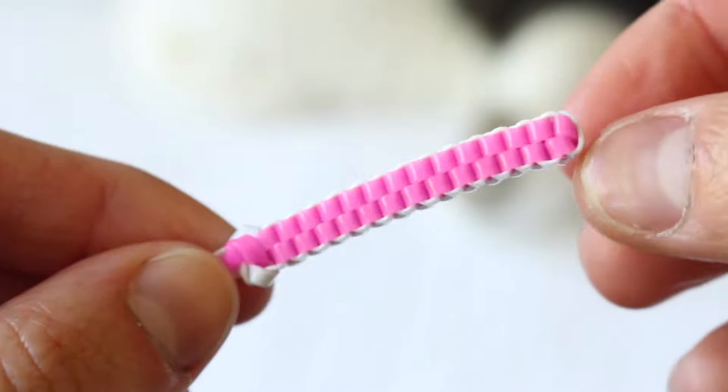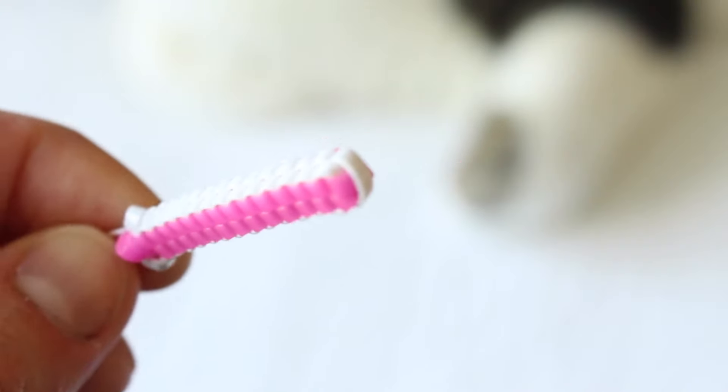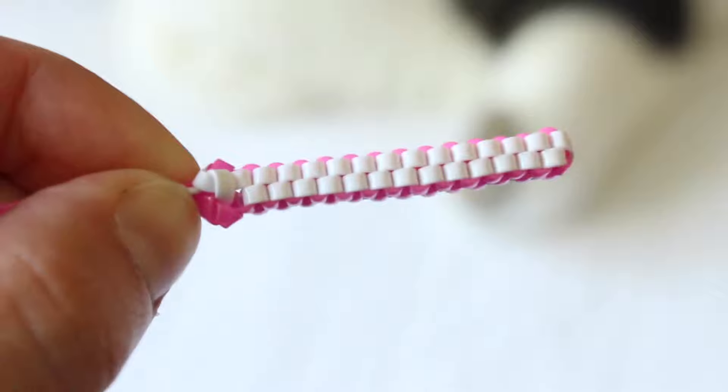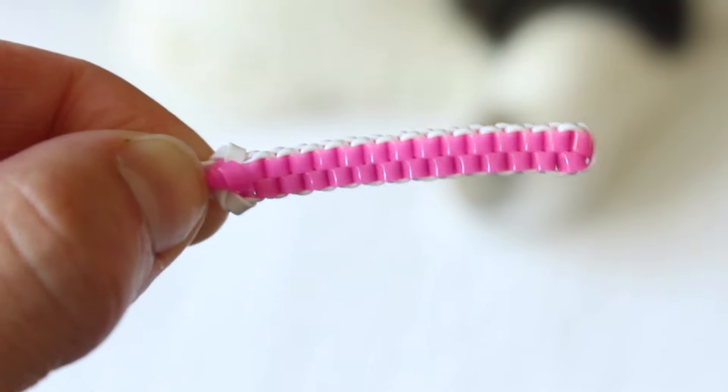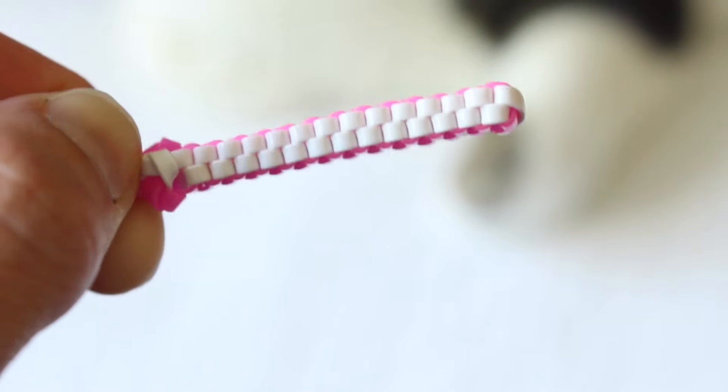And there you have it, that is how you do the box stitch lanyard. So if you want to see more tutorials from me, be sure to hit the like and subscribe button and I will see you in the next one. Bye!